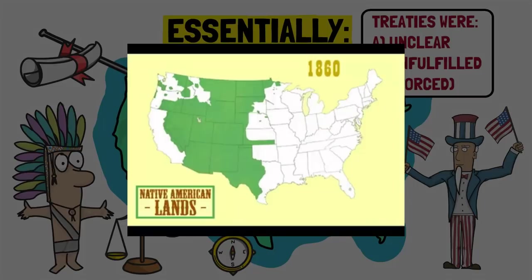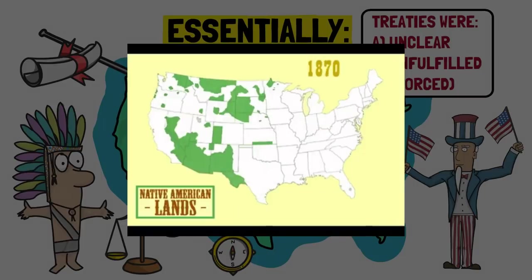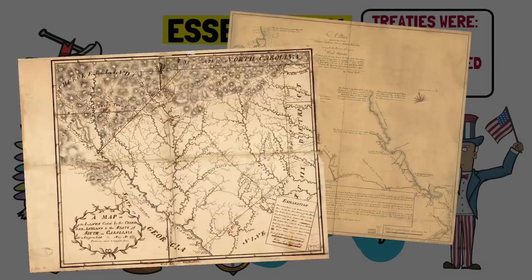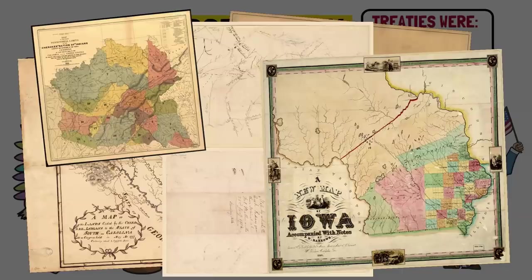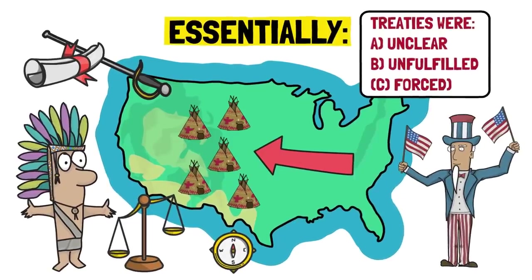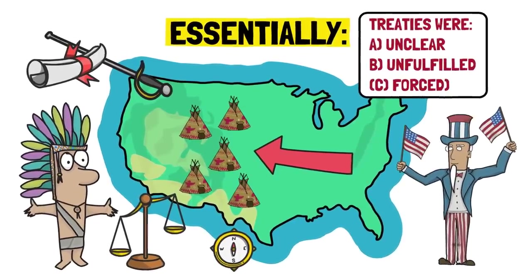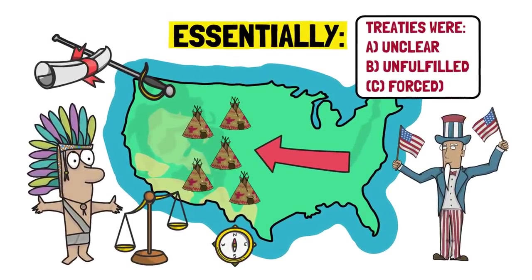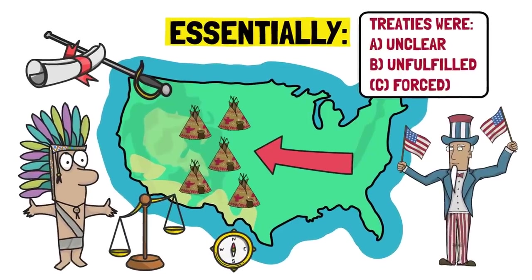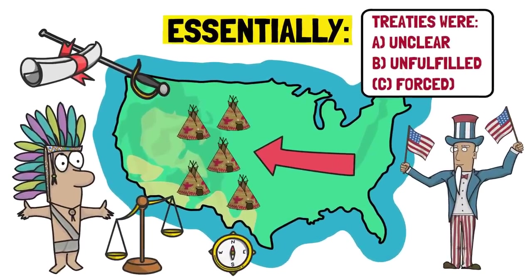The issue is that, despite the US government choosing to ignore the treaties' existence and terms, they still exist, and many of them are signed and ratified, therefore holding legal value up to today. Unless they are revoked by Congress, a court that reviews the documents may decide that many of them should in fact be in effect, and demand that compensation is provided, if not the full application of the terms written at the time.